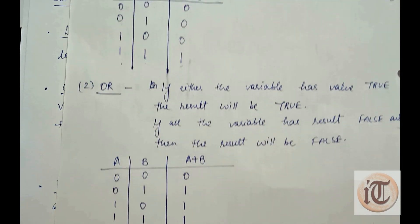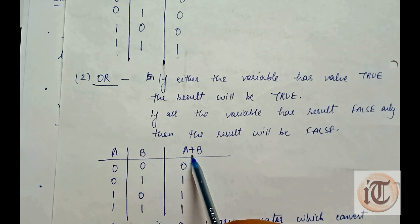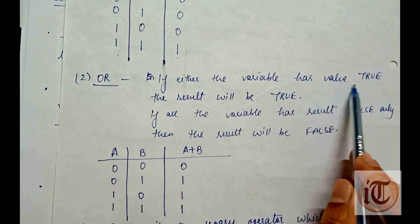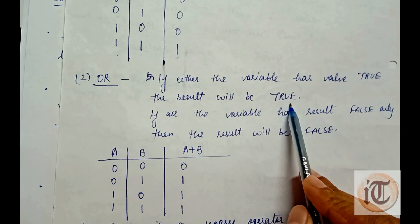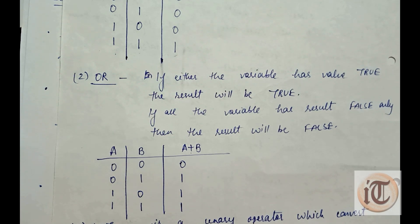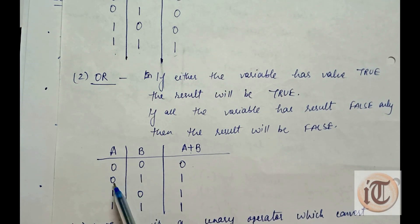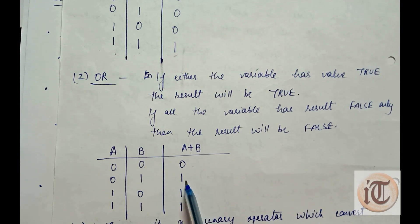Now for the OR operation, we denote it with the plus sign. In OR, if either variable has the value true, the result will be true — meaning if either a or b contains a 1, the outcome is 1. Only when all variables are false will the result be false. So when both a and b are 0 the result is 0, but for combinations like 0,1 or 1,0 or 1,1, since at least one variable is 1, the outcome is 1.